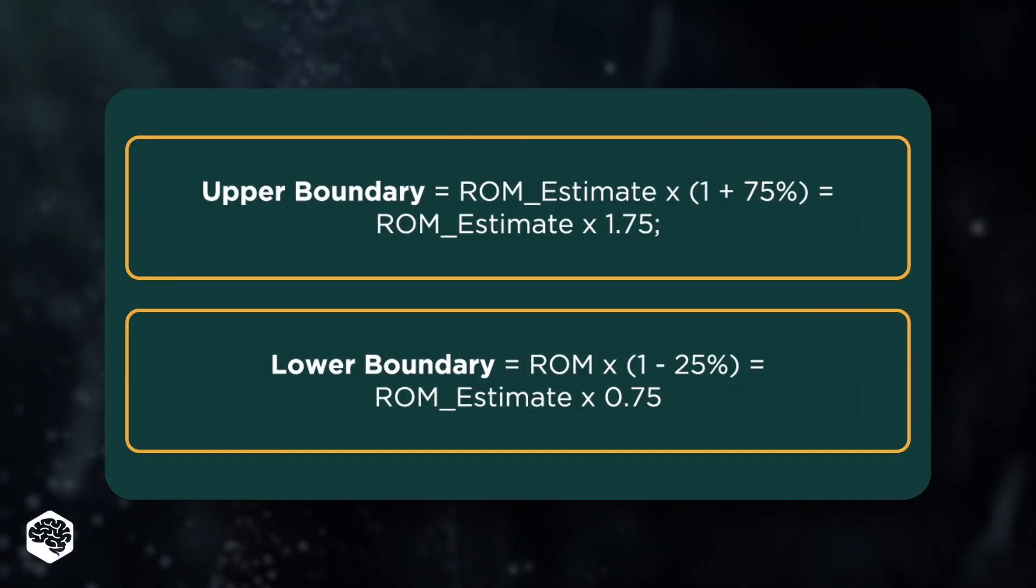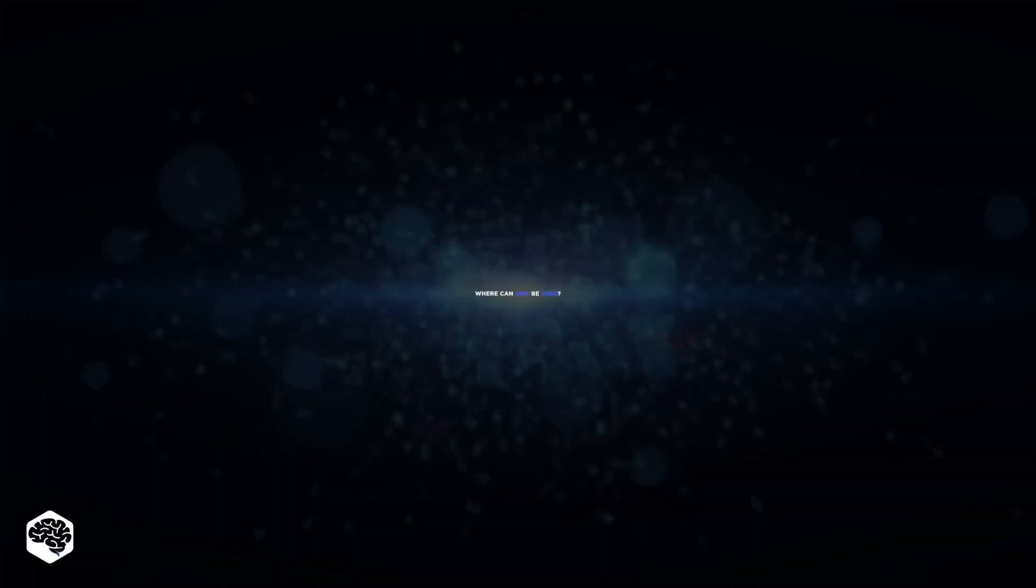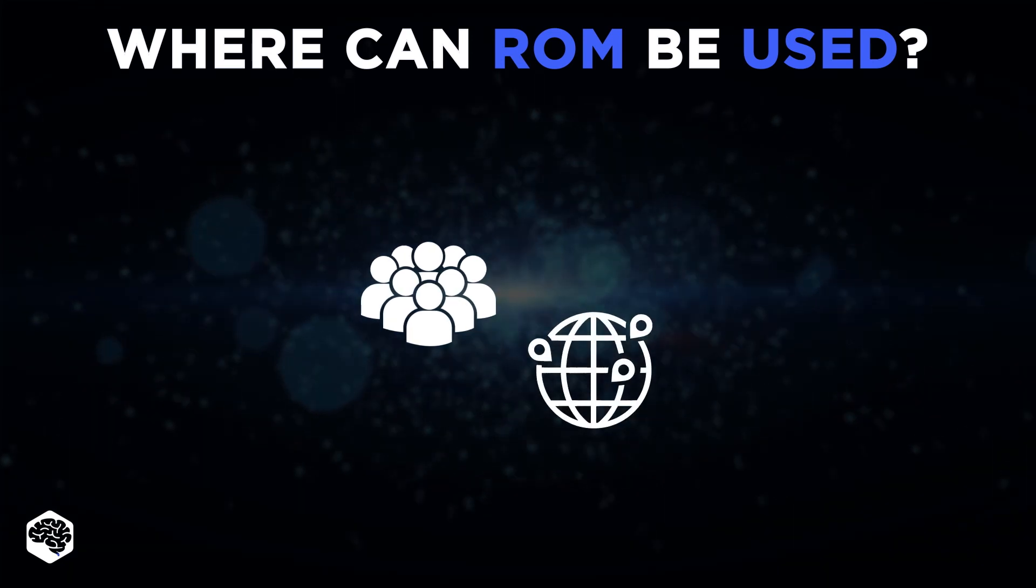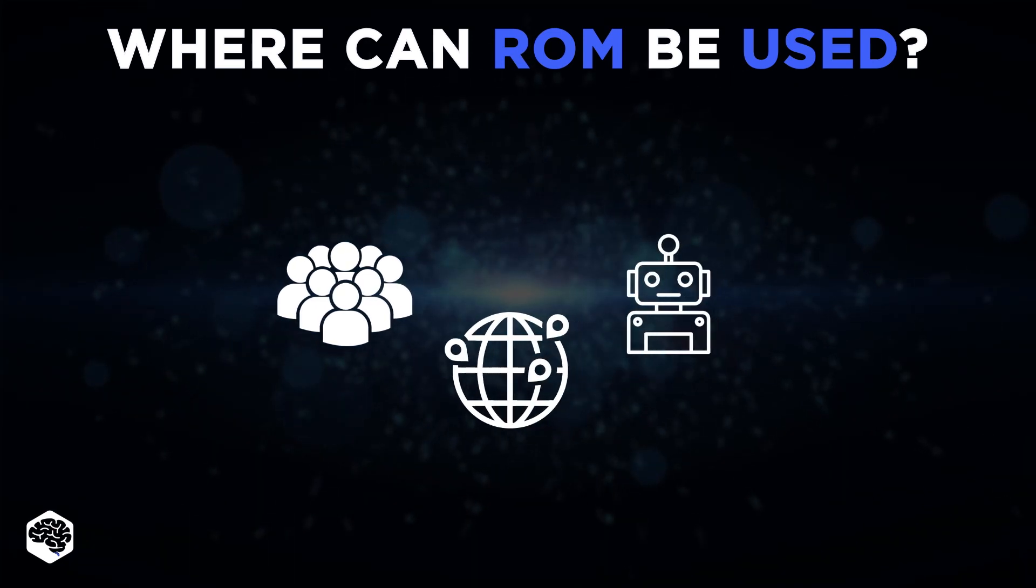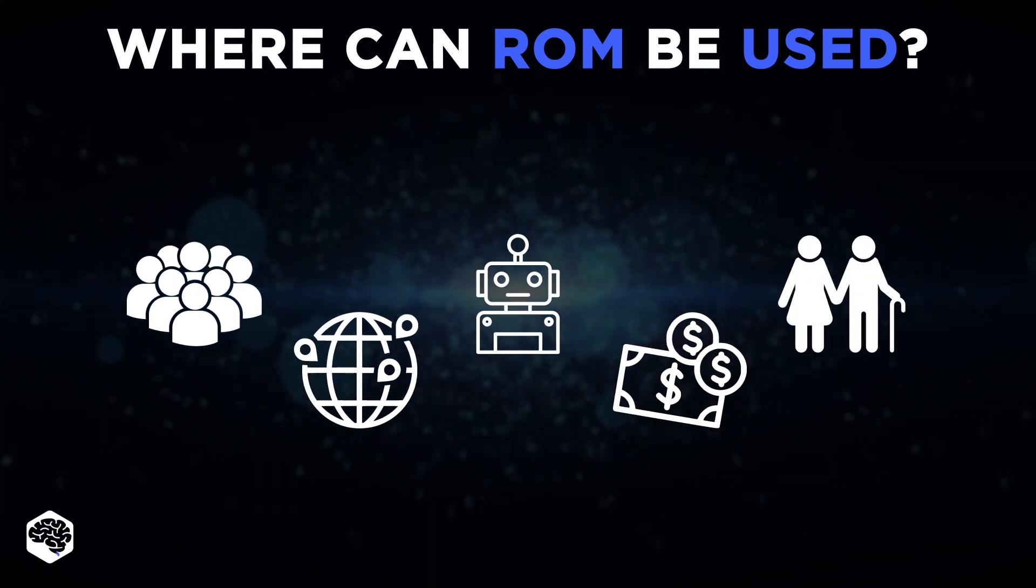ROM has an accuracy range of negative 25% to plus 75%. ROM could be used for large projects, international projects, innovative projects, large budget projects, and projects with a historical background.